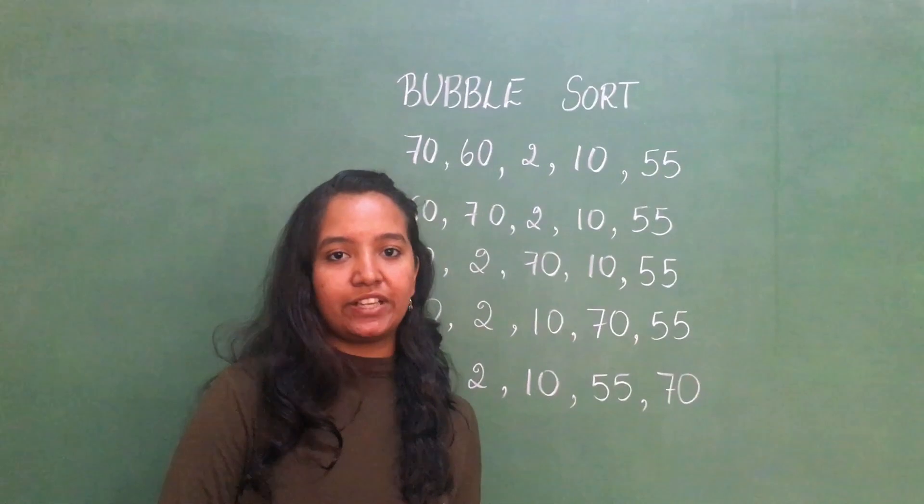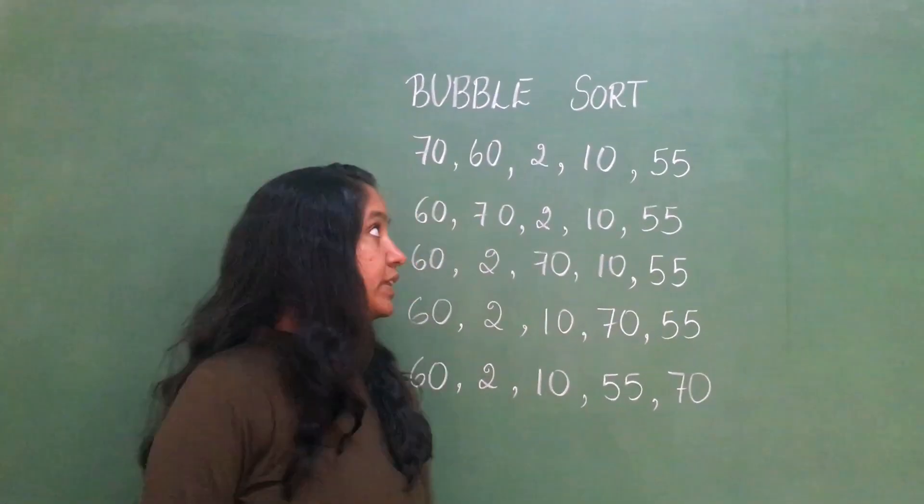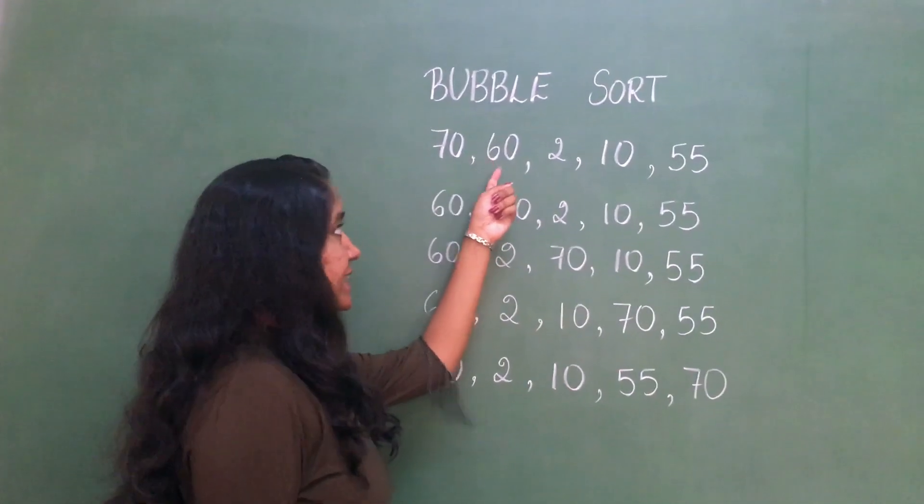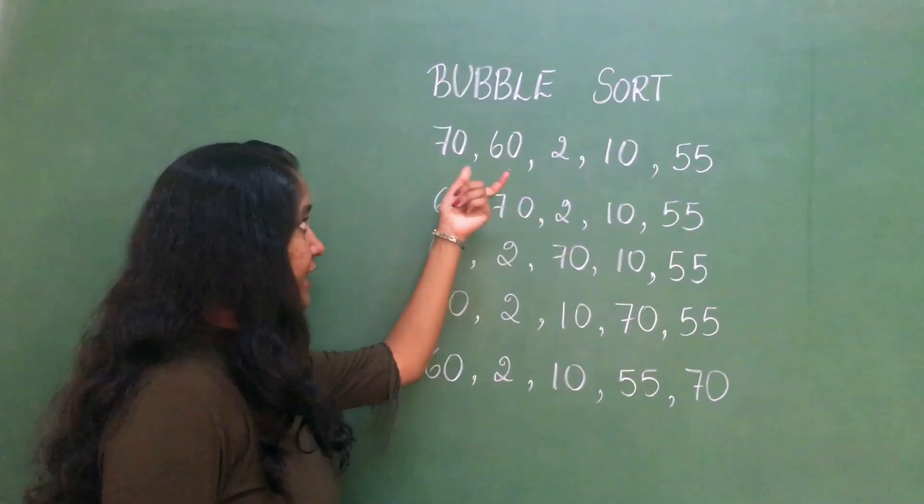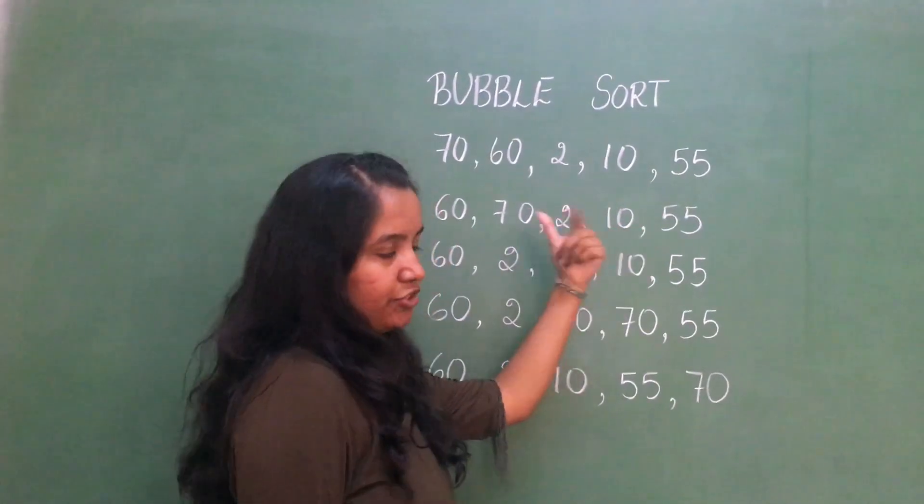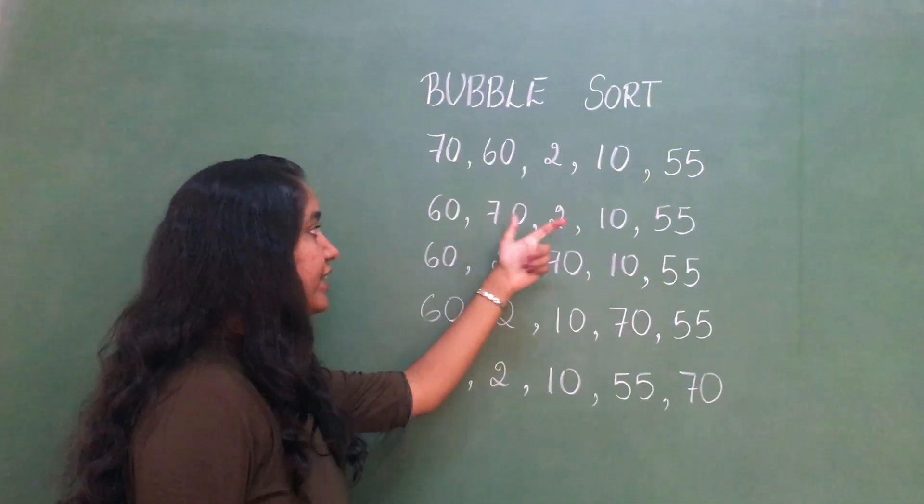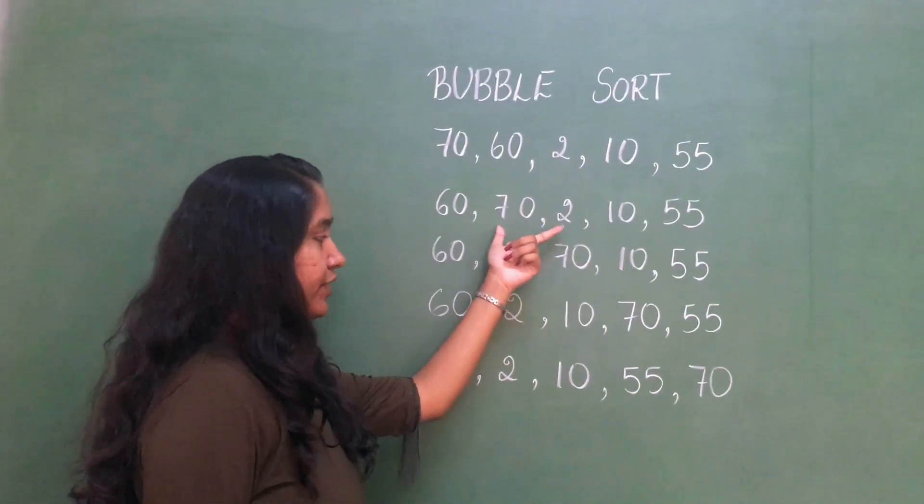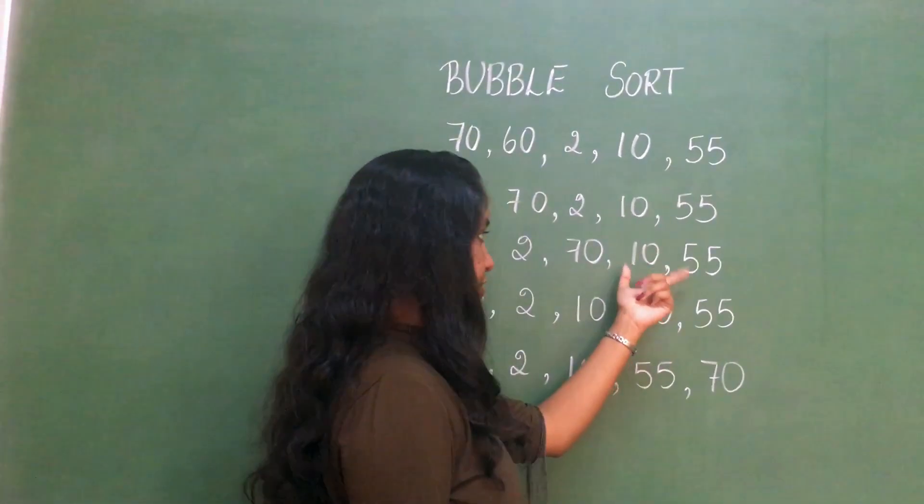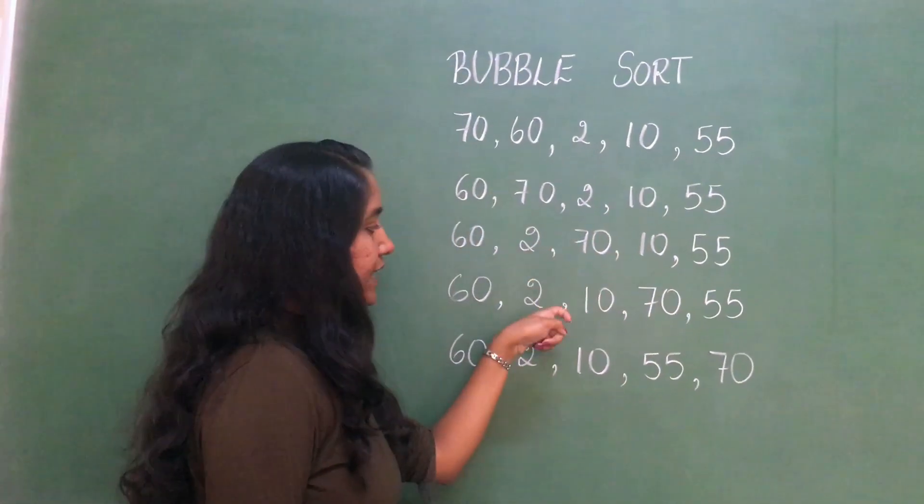Let us take an example of 5 integers and see how bubble sort works. In the first pass, it compares 70 with 60, and 60 is a lesser number compared to 70, so these two numbers swap their places and the other numbers remain in their original position. Next, it compares 70 with 2, and since 2 is a lesser number, these two numbers swap their places. The same process takes place.